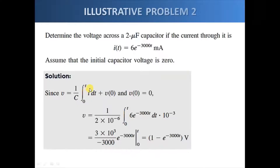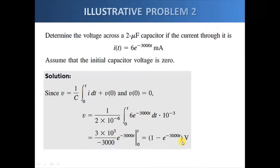Since the initial voltage is zero, this leaves us with just the integral term. We go ahead and integrate — we substitute the current function, perform the integration, and substitute the limits. The result for V is actually an exponential function, just as the current flowing towards the capacitor is.